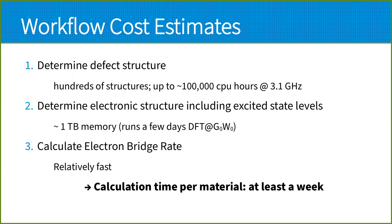There is a caveat: these calculations can be very demanding. To determine the defect structure of a system with low symmetry, we may need to calculate hundreds of structures, and just one material could consume 100,000 CPU hours. Similarly, calculating excited state levels accurately is also a big problem — we did some G0W0 calculations on our cluster for a few days and need at least a terabyte of memory. We are both memory and CPU limited in this project, and calculation time for a material is at least a week.